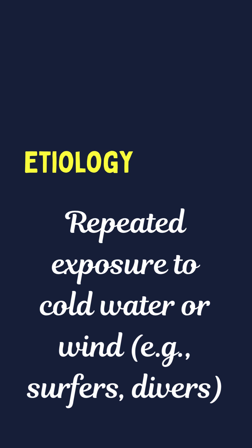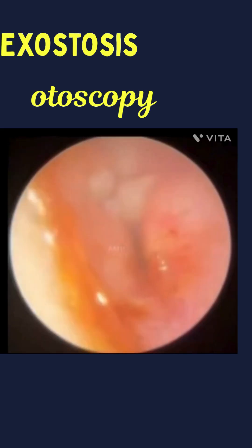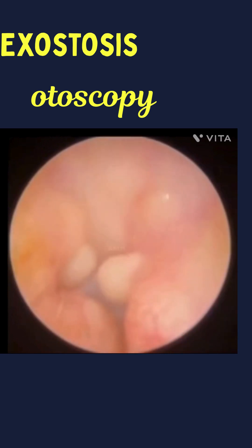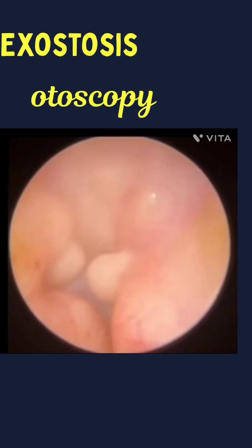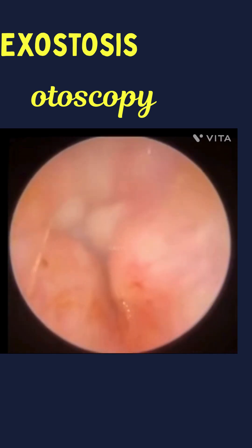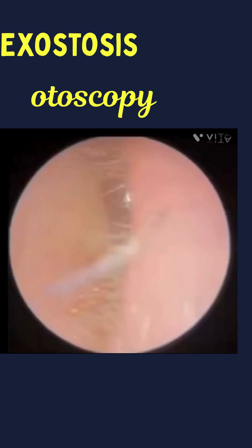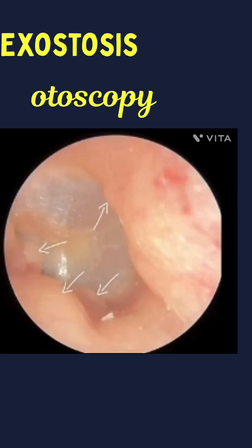On otoscopy, exostosis shows bilateral multiple sessile bony growths arising from the medial portion of the external auditory canal, just lateral to the tympanic membrane and medial to the suture lines of the temporal bone.